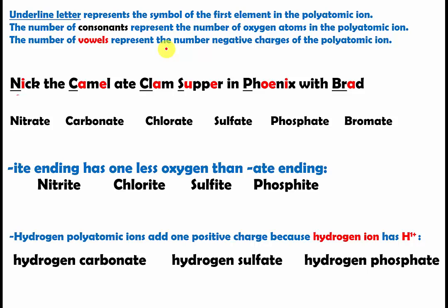For example, let's look at 'Nick.' The purpose of this trick is to know the number of oxygen atoms and the number of negative charges. You need to know that each word is related to a specific polyatomic ion. 'Nick' represents nitrate, and N is underlined, so the element symbol is N.